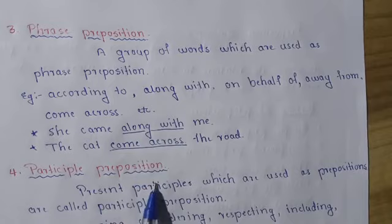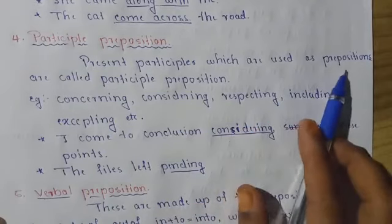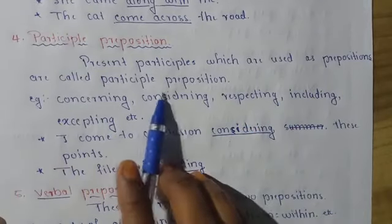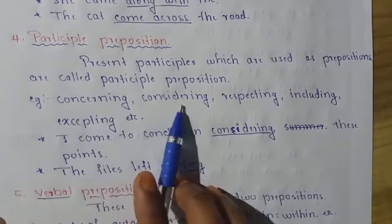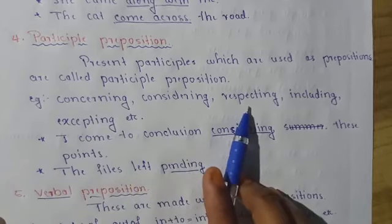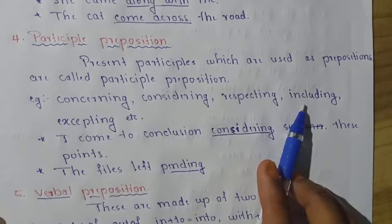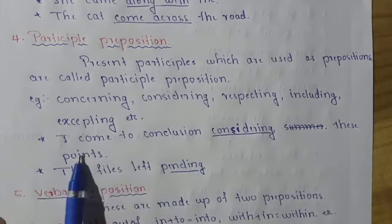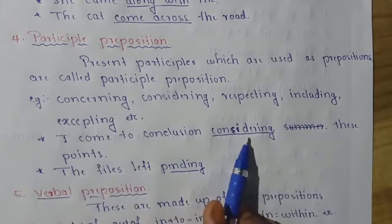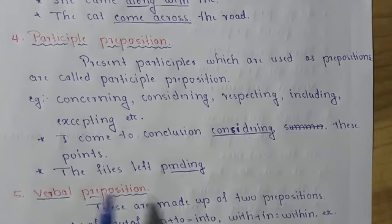The fourth one is participle preposition. Present participles which are used as prepositions are called participle prepositions. For example: concerning, considering, respecting, including, etc. For example: I come to a conclusion considering these points. The files were left pending.